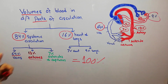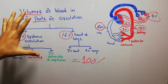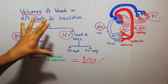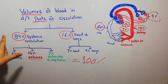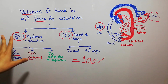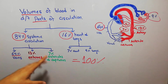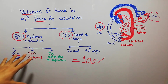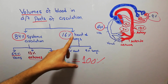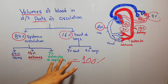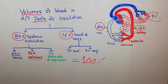That's a very simple and easy topic about the volumes of blood in different parts of the circulation. It's divided into two main types: systemic and pulmonary. Systemic has 84%, pulmonary has 16%. The systemic is further divided into veins, arteries, arterioles, and capillaries, and the pulmonary circuit is divided into heart and lungs. Thanks for watching the video.